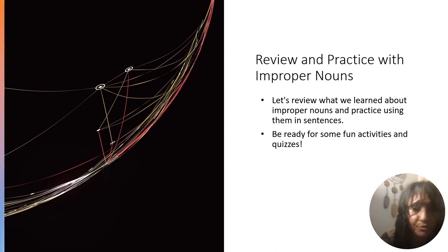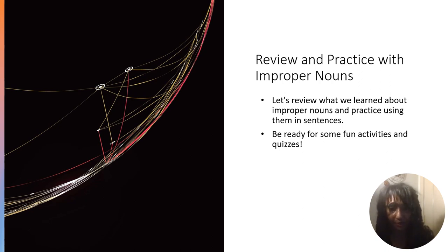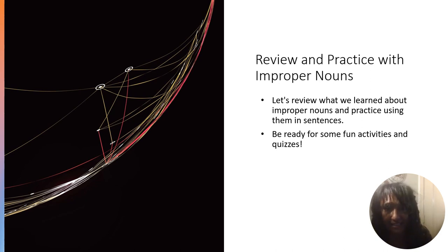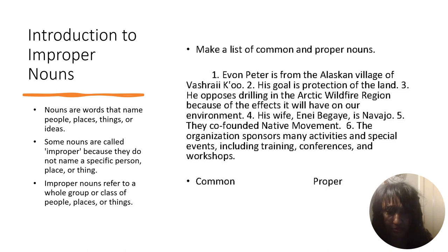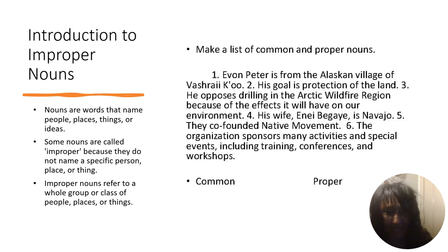So let's use our final minutes together to review and practice with improper nouns. What we've been talking about is nouns, but in particular improper nouns. Nouns are words that name person, places, animals, or things — also ideas. So an idea like love or dream or balance or success. Some nouns are called improper because they do not name a specific person, place, or thing. And improper nouns can refer to one or a whole group or class of people, places, or things.